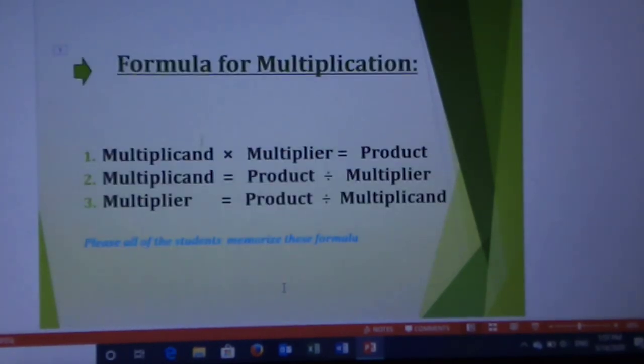Now, formula for multiplication. Number 1. Multiplicand multiply multiplier equal product. Number 2. Multiplicand equal product divide multiplier. Please, all of the students memorize this formula.